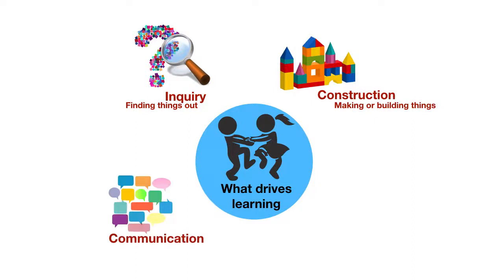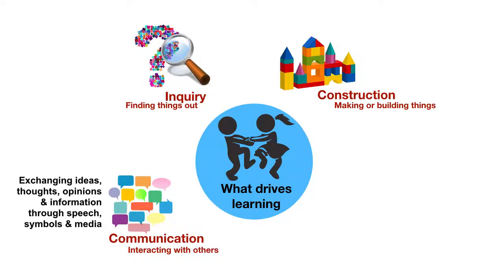The third thing Dewey talks about is that a primary impulse for learning is communication, which is basically interacting with others. We do this all the time — humans are social animals after all. We do this by exchanging ideas, thoughts, opinions, and information through speech, through symbols and media. It doesn't necessarily have to be just words; it could be emojis, photographs, video, sign language, and all of those things coming together in order to communicate.